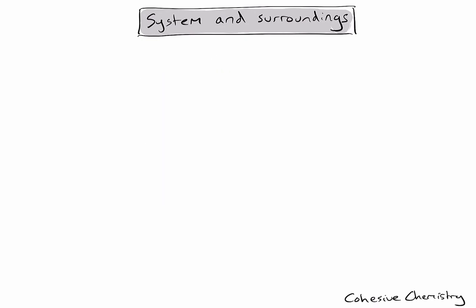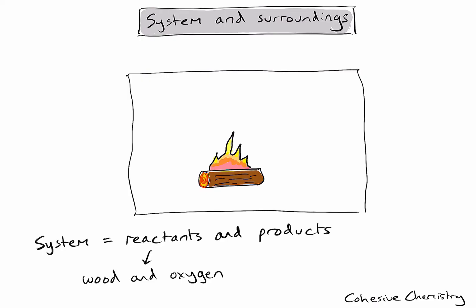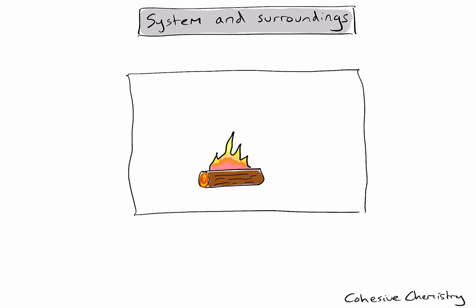Let's first imagine a burning piece of wood. In this case, what is in my system? Well, the system is any reactants and products. So I would imagine my piece of wood is reacting with oxygen in the air, and it might be producing things like carbon dioxide and water. In this example, my chemical reaction is clearly releasing energy. And where's that energy going? Well, it must be transferred to the surroundings. In this case, the surroundings — the substance that is around my chemical reaction — is going to be air. So any energy released from this chemical reaction must be being transferred to molecules in the air.